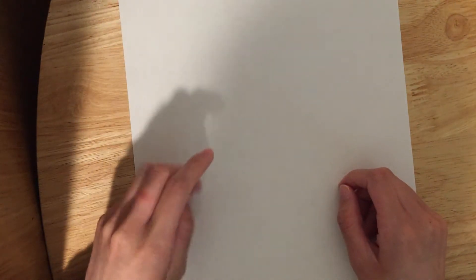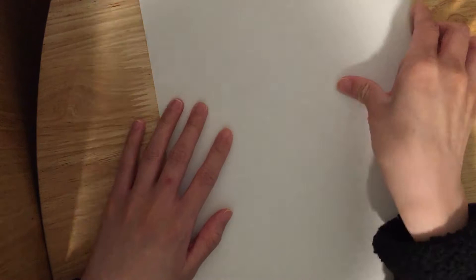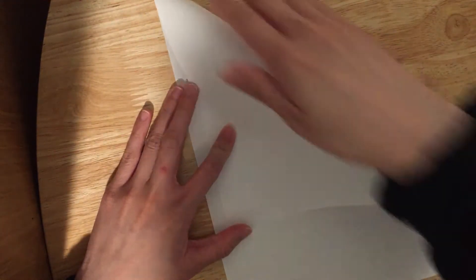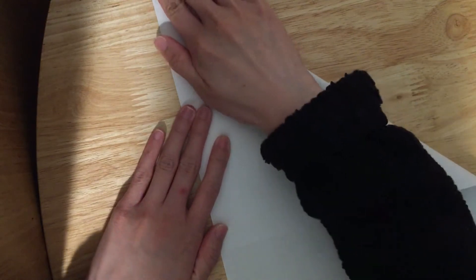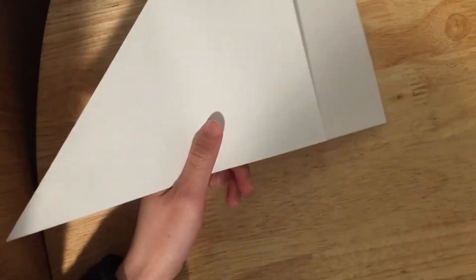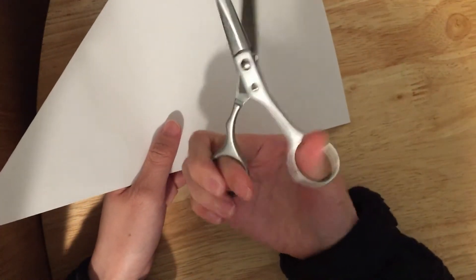But first, we're gonna make sure that it's in a square shape. So let's first fold it into a triangular shape. Then you can see that we have an excess part. And grab a pair of scissors and cut the excess part off.